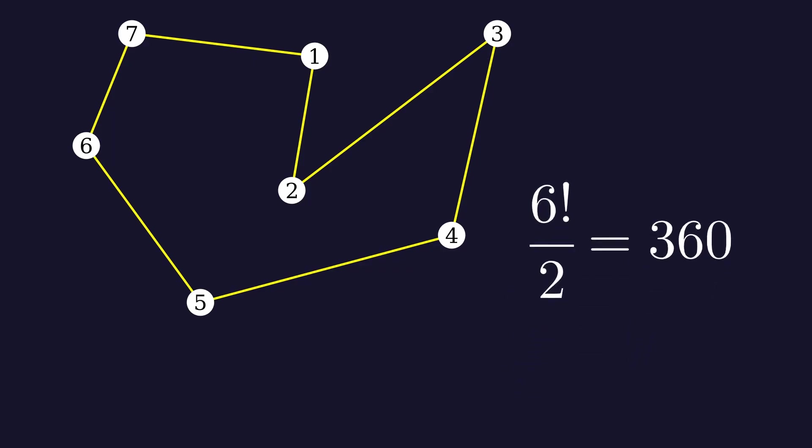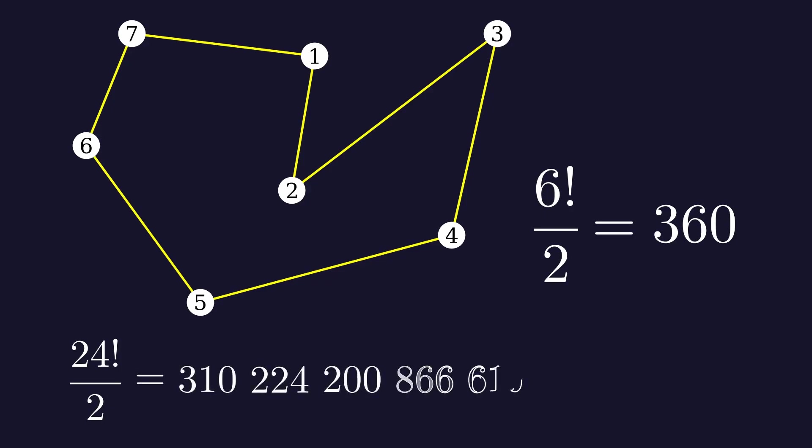But what if our salesman had 25 cities to visit? Then the total number of paths would be equal to 24 factorial divided by 2. This number is too large for even the fastest computers in the world. So we have to come up with a better way to solve this problem.